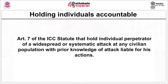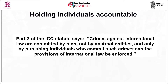Impunity no more protects individuals against state-driven actions of violations. Article 7 of the ICC Statute holds individual perpetrators of a widespread or systematic attack on any civilian population, with prior knowledge of the attack, liable for their actions. Part 3 of the ICC Statute says crimes against international law are committed by men, not by abstract entities, and only by punishing individuals who commit such crimes can the provisions of international law be enforced.